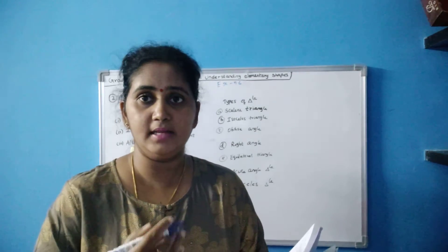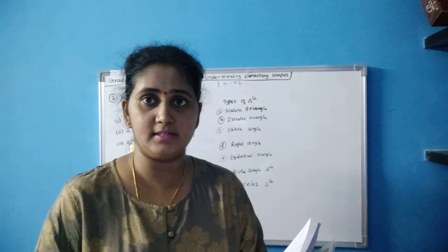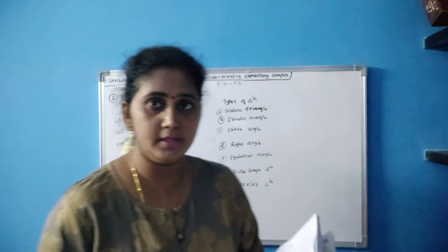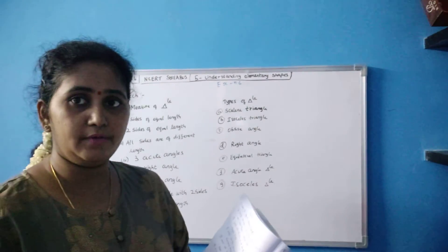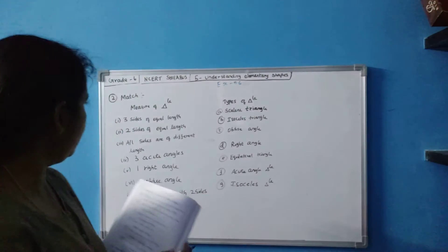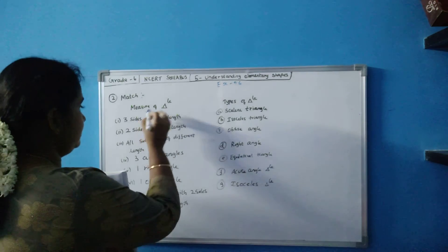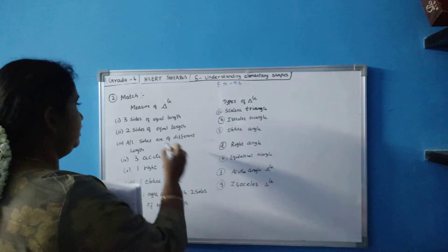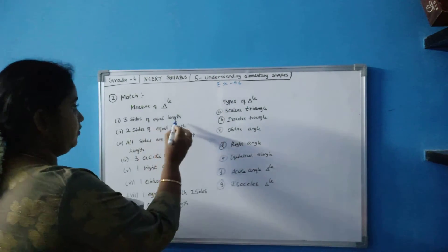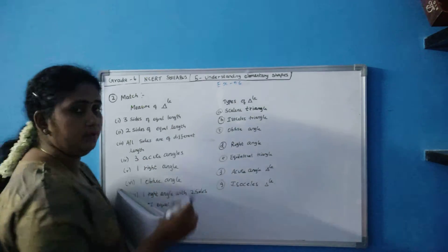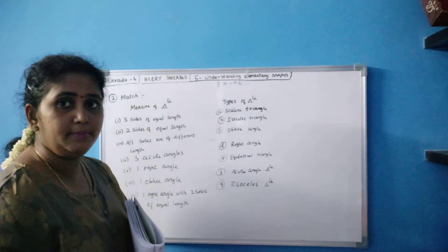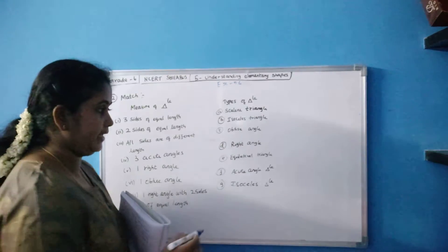First let us see the second sum, then we will see the first sum, because I wrote the second sum on the board. So — match the following. This is the measure of triangle and this is the types of triangle. Three sides of equal length — all lengths are equal — so it is nothing but equilateral triangle.